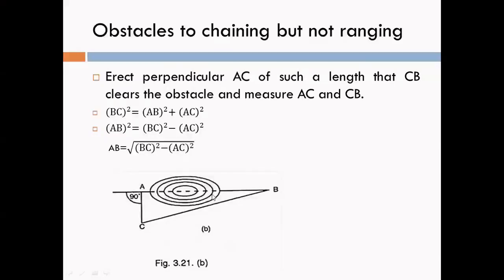This method is used for chaining. From point A, draw perpendicular line AC and select point C on the ground. Join C to B. The triangle BAC is a right angle triangle, so use Pythagoras law: BC² = AB² + AC². Therefore, AB² = BC² − AC². Measure the lengths of BC and AC on the ground; from those values we get the length of line AB.